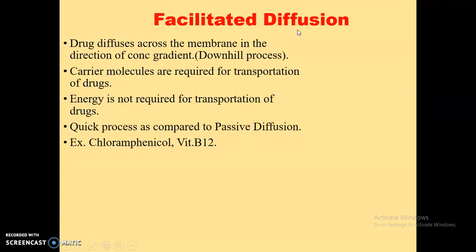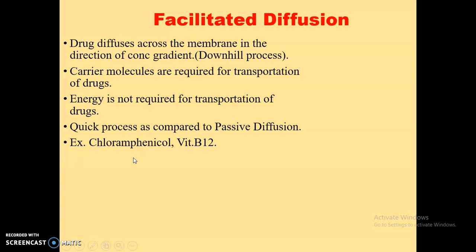The second method is facilitated diffusion. It is similar to passive diffusion; the only difference is that it requires the help of a carrier molecule. As in passive diffusion, the drug diffuses across the membrane in the direction of the concentration gradient — from higher concentration to lower concentration — so it is also known as a downhill process. But during transportation, it needs the help of a carrier molecule in the form of proteins or enzymes. Energy is not required for transportation of the molecule; though it uses a carrier, no extra energy is needed. This process is quicker than passive diffusion. Drugs transported by this mechanism include chloramphenicol and vitamin B12. Vitamin B12 needs the carrier intrinsic factor, which is present in the intestine.